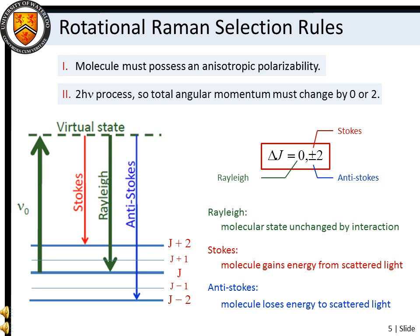Rotational Raman scattering requires that the molecule possess an anisotropic polarizability. We can consider this our gross selection rule for rotational Raman spectroscopy, in much the same way that a permanent molecular dipole moment is required for a molecule to be microwave active. We can also specify a delta J equals zero or plus or minus two selection rule for the scattering process. This arises due to the fact that Raman scattering is a two-photon process and angular momentum must be conserved. Note that if the molecular state is unchanged by the scattering interaction, the process is Rayleigh scattering.